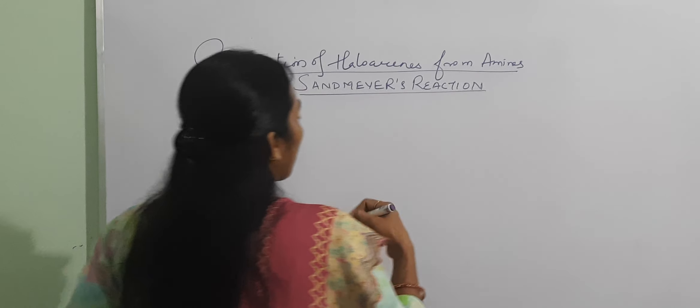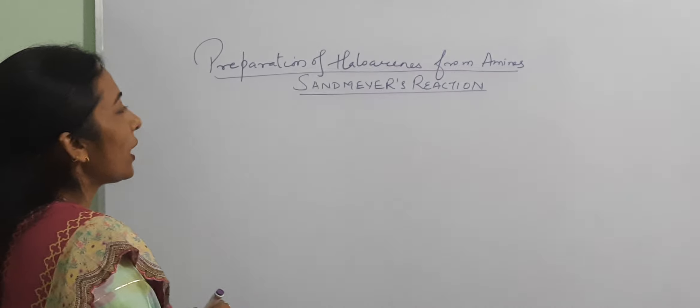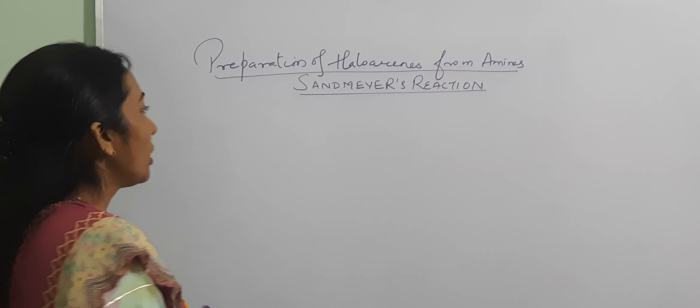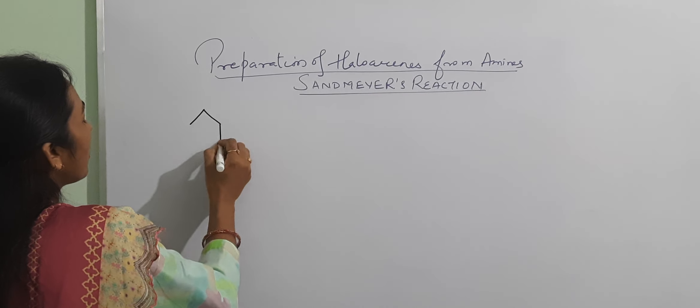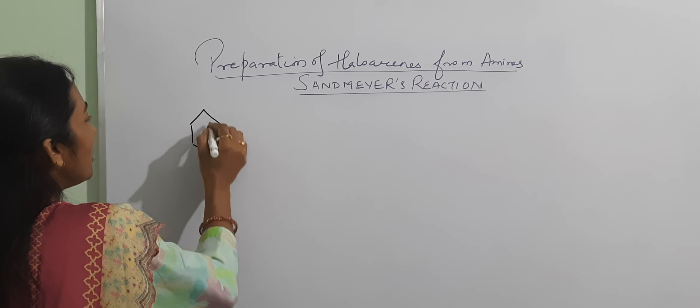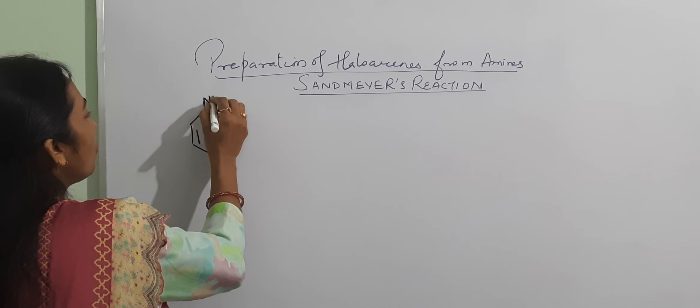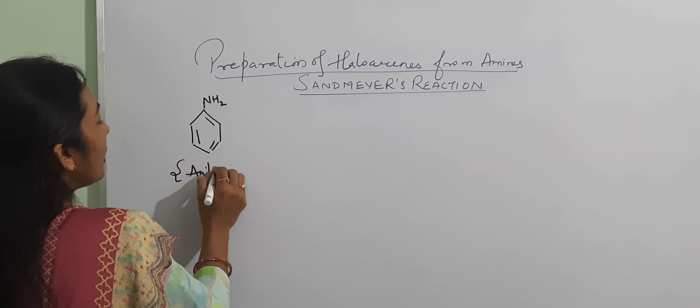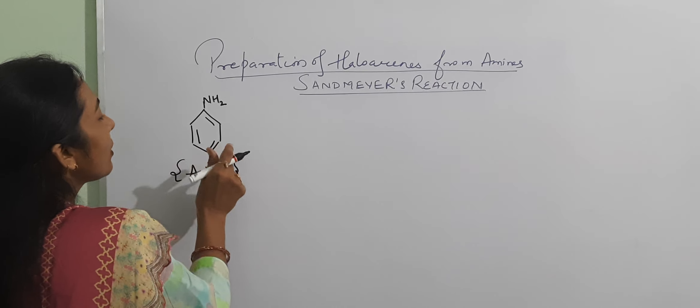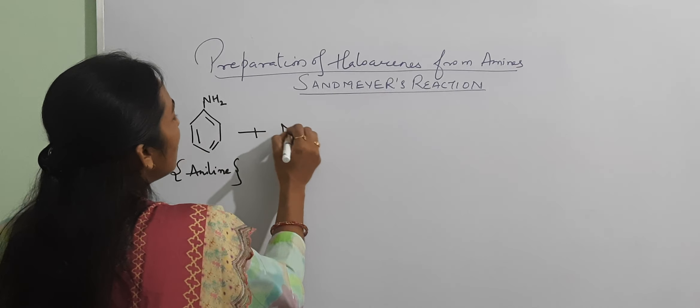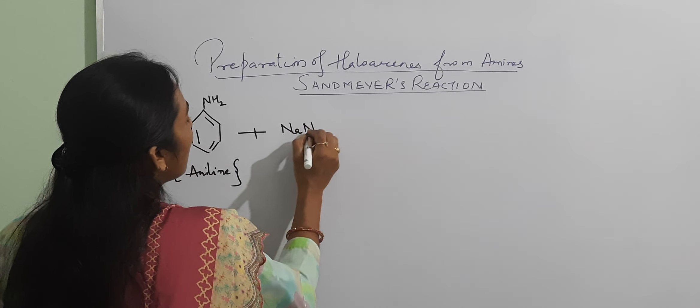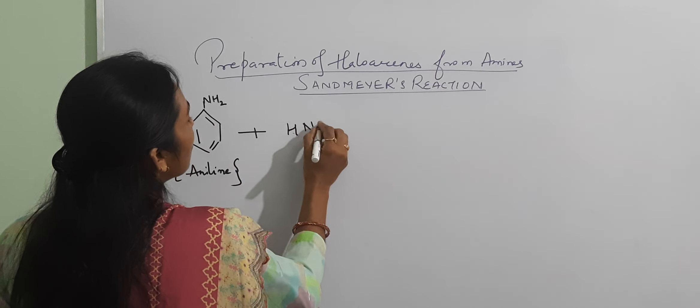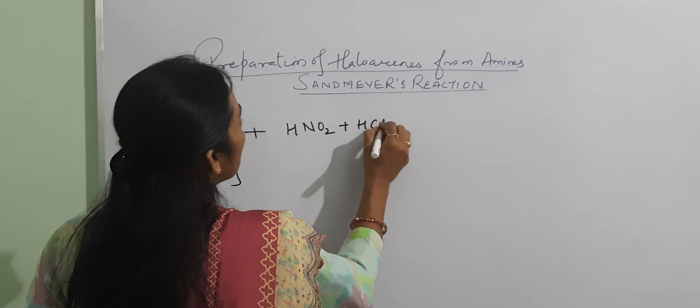When we have benzene with NH2 group, what do we say? Aniline, and this is our aromatic amine. Now we have nitrous acid that is HNO2 plus HCl in acidic presence.